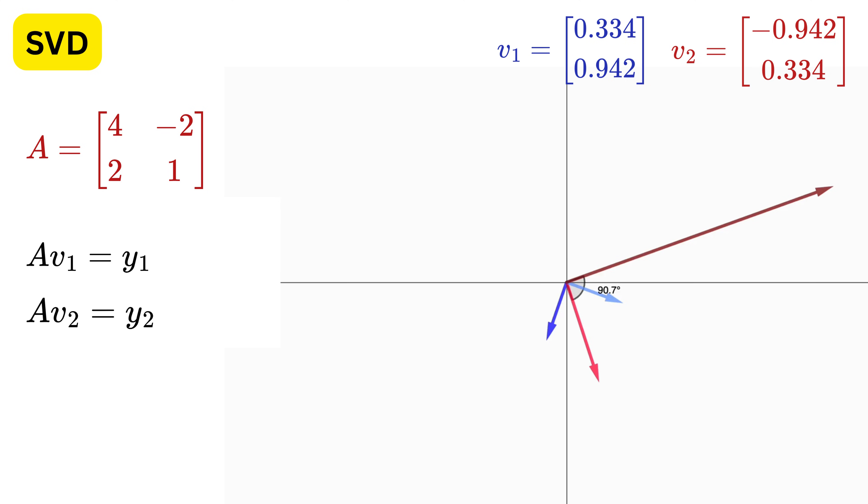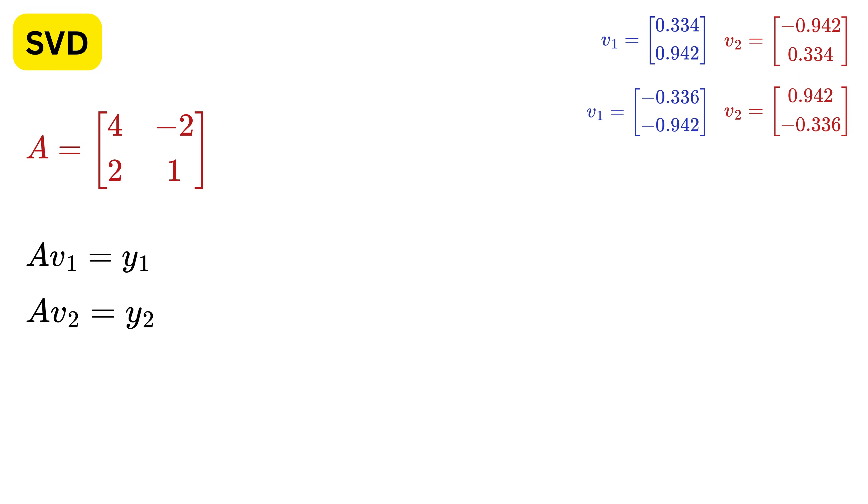Similarly, at this orientation, the angle between Y1 and Y2 is again around 90 degrees, which means for these different sets of V1 and V2, both the transformed vectors are orthogonal. Keep them aside for a while.